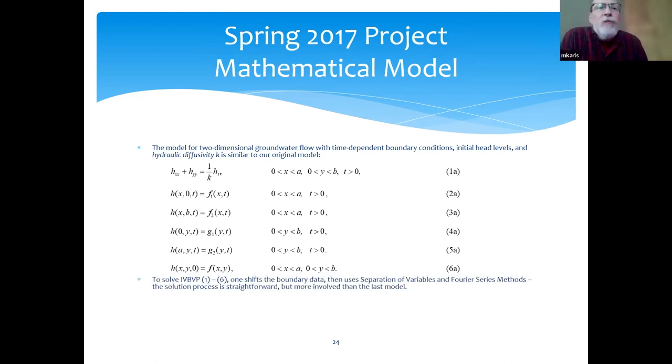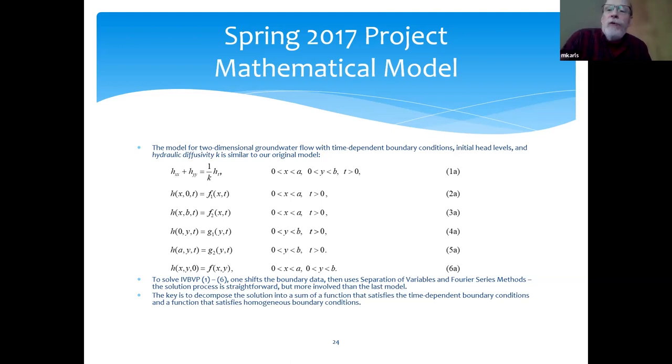To solve this revised initial value boundary value problem, one shifts the boundary data, uses separation of variables and Fourier series methods. The solution process is, I'm going to say straightforward in quotes, but more involved than the last model. The key is to decompose the solution into a sum of a function that satisfies the time-dependent boundary conditions and a function that satisfies homogeneous boundary conditions.